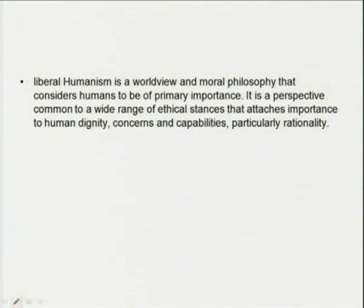Liberal humanism has its roots at the beginning of English studies in the early 1800s and became fully articulated between 1930 and 1950. It was attacked by theories such as Marxism and Feminism beginning in the 1960s. Liberal humanism is therefore a world view and moral philosophy that considers humans to be of primary importance — it is a perspective common to a wide range of ethical stances that attaches importance to human dignity, concerns, and capabilities, particularly rationality.